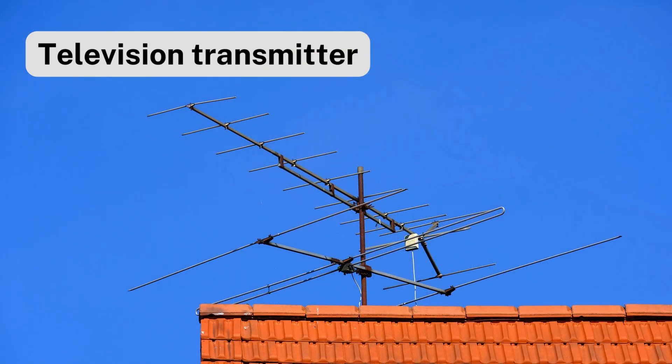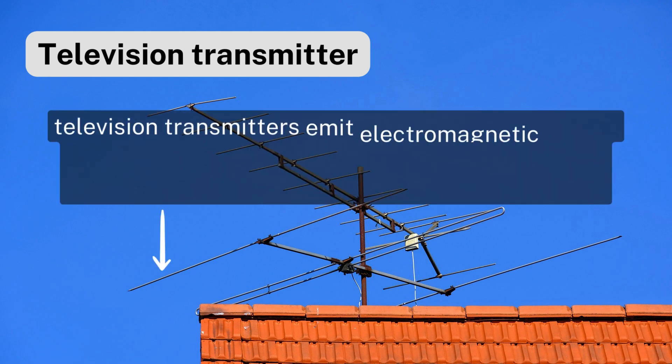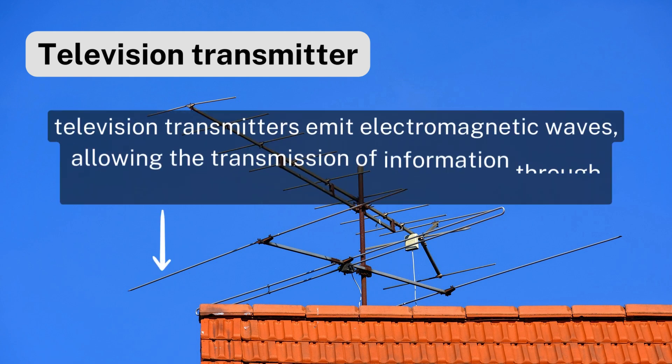Television transmitters generate and emit electromagnetic waves, which carry television signals to receivers, enabling the transmission of information through electromagnetic radiation.